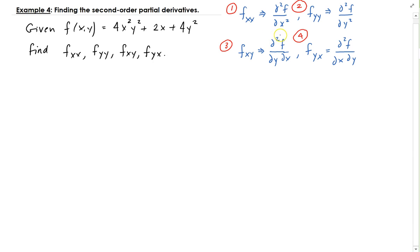And then find the second order partial of f with respect to y and x, and then take the second partial of f with respect to x and y. For the first one, this is interpreted as: you're going to take the partial of f with respect to x, and then take the partial of that result with respect to x.